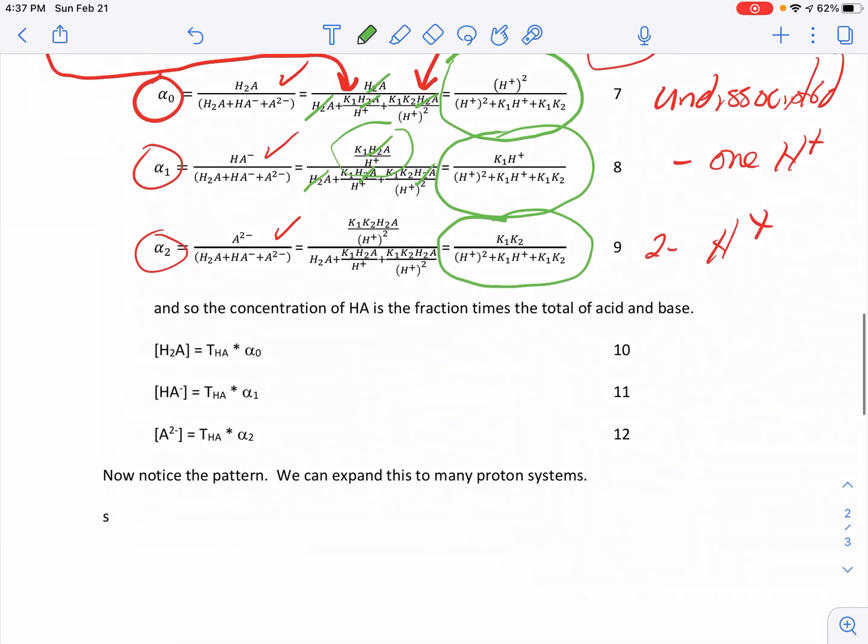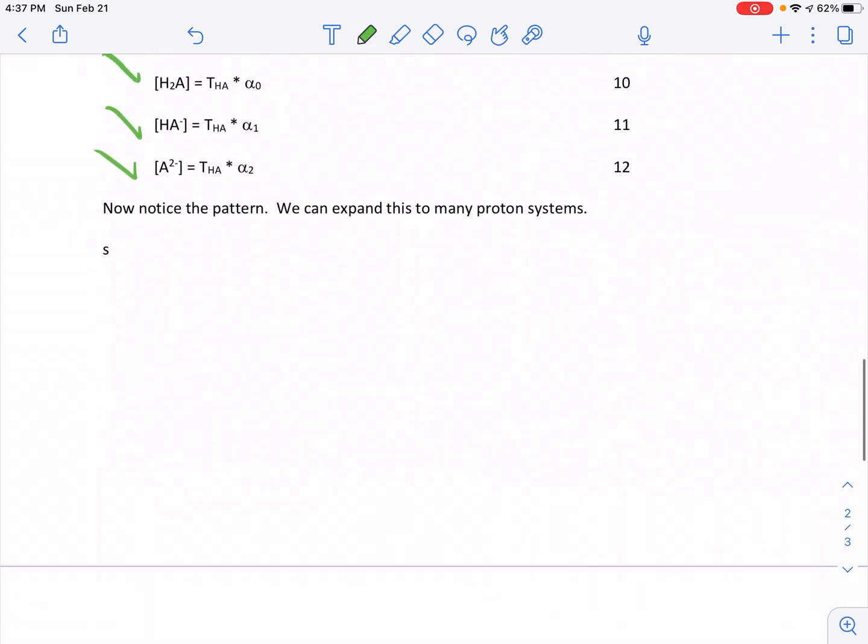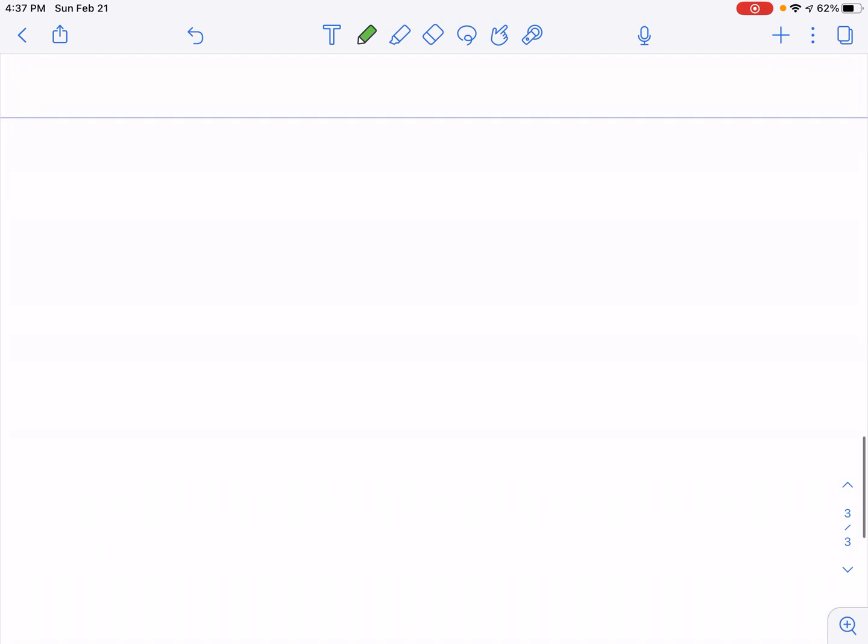Well, the actual concentrations are nothing more than the total concentration, which is known for your problem times the alphas. And so now I have expressions for H2A, HA-, and A2-. Okay. Well, notice this pattern. And this pattern can be expanded to many proton systems. And I will go ahead and show you how you might do that.